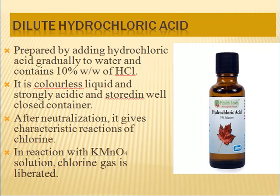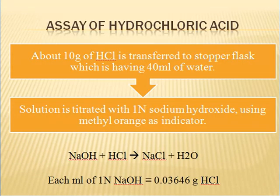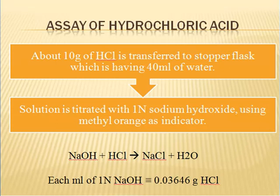To perform the assay, about 10 mg of hydrochloric acid is transferred to a stoppered flask containing 40 ml of water. The solution is titrated with 1 normal sodium hydroxide using methyl orange as an indicator. The reaction is NaOH + HCl → NaCl + H2O. To calculate the amount of hydrogen chloride, 1 normal NaOH is equivalent to 0.03646 g of hydrogen chloride. It is used as an acidifier and should be stored in a well-closed container.